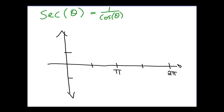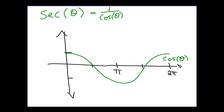We're going to start by graphing out the cosine graph, and we're going to use that cosine graph to help us generate the secant graph. This graph is the cosine graph, and we're going to use it to come up with secant.